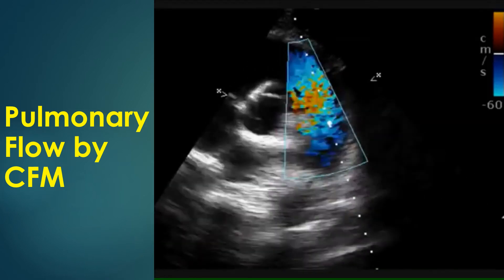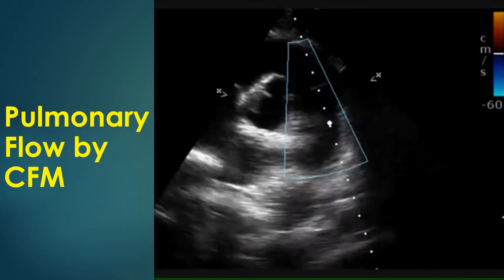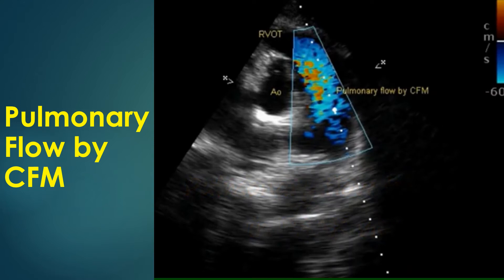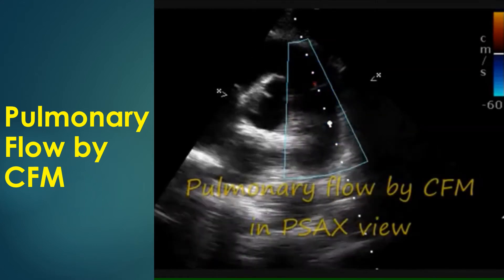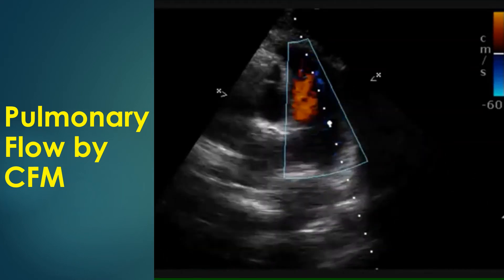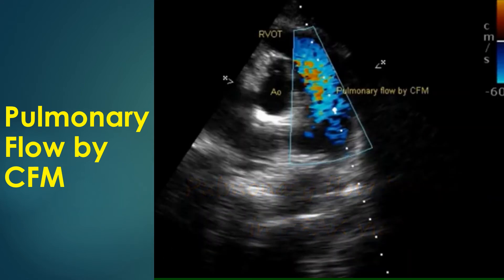Parasternal short axis view showing right ventricular outflow tract, pulmonary artery, and aorta. The right ventricular outflow tract and pulmonary artery are seen curving around the aorta to form the circle and sausage appearance. Pulmonary artery is identified by its bifurcation into left and right pulmonary arteries. Color Doppler shows a blue flow directed away from the transducer. A tiny reverse flow of pulmonary regurgitation, appearing like a small flame-like jet directed upwards from the pulmonary valve in the closed position, can be seen in most individuals.